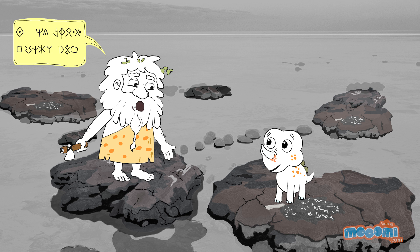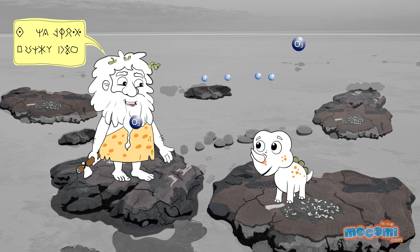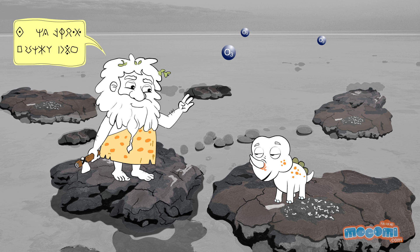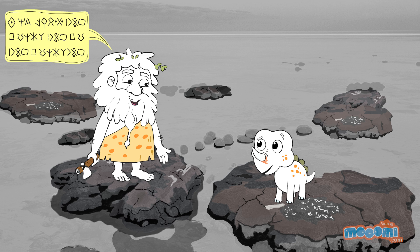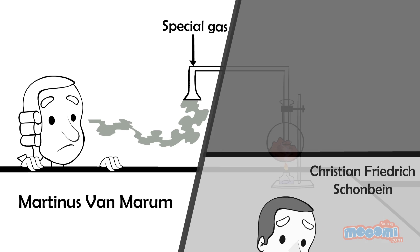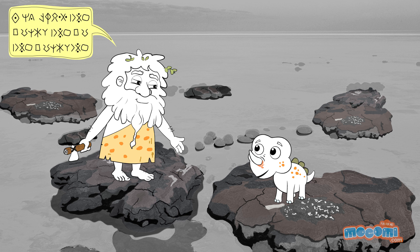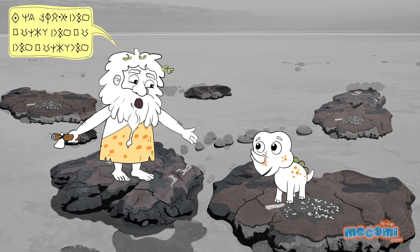Ozone is a form of oxygen. The oxygen that we breathe is two atoms of oxygen bound together. Ozone, on the other hand, is made of three atoms of oxygen bound together. Ozone was first created in a lab by the Dutch chemist Martinus van Maroom in 1785. He noticed an unusual smell after some experiments. Half a century later, Christian Friedrich Schönbein noticed the same smell following a bolt of lightning. He was successful in isolating the chemical and called it ozone, which means to smell.